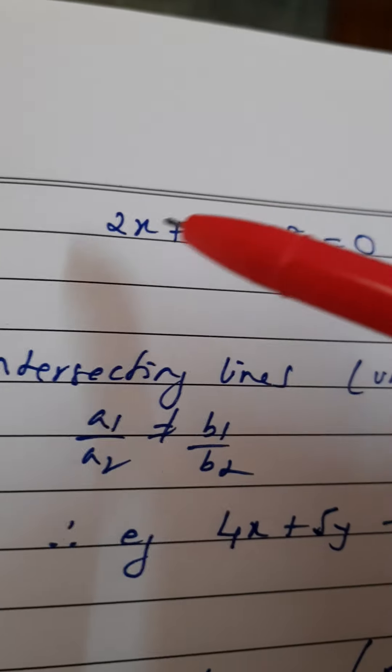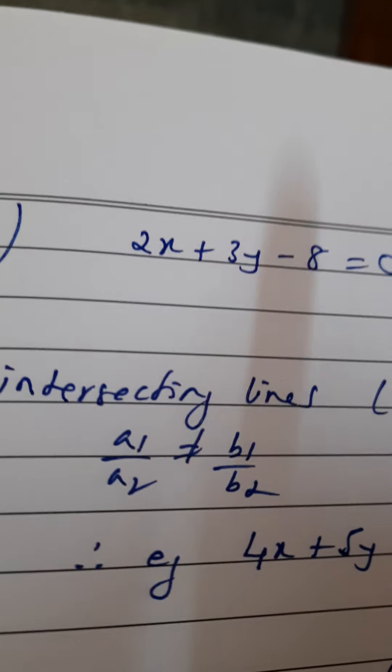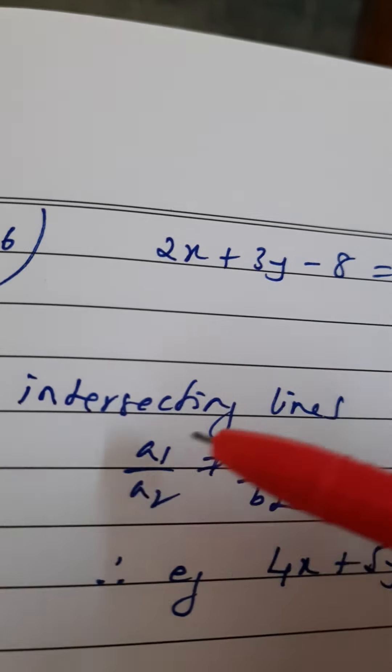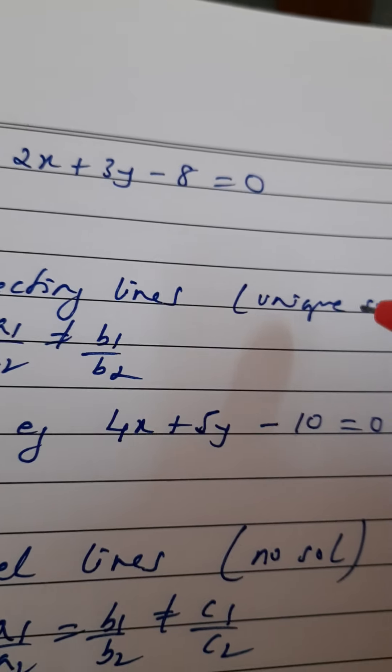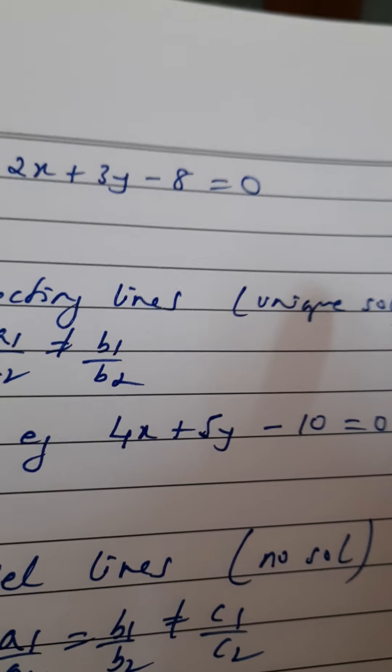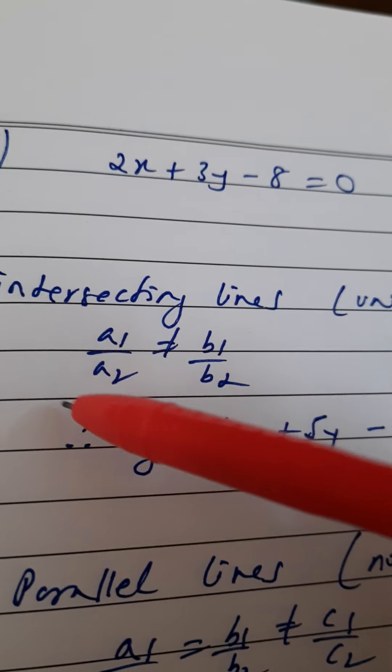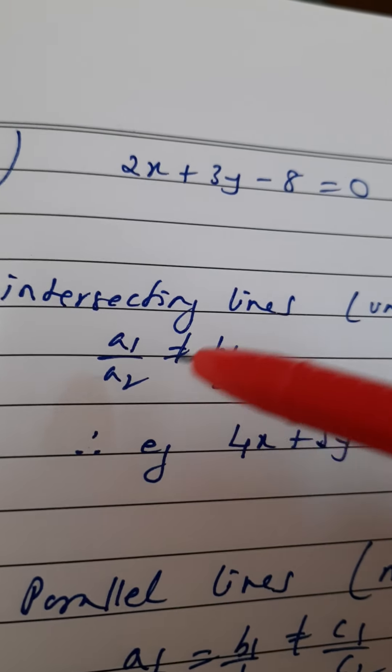First, concentrate on what is given: 2x + 3y - 8 = 0. We need intersecting lines. If the lines are intersecting, that means the solution has to be unique. The condition for unique solution is a1/a2 should not be equal to b1/b2.